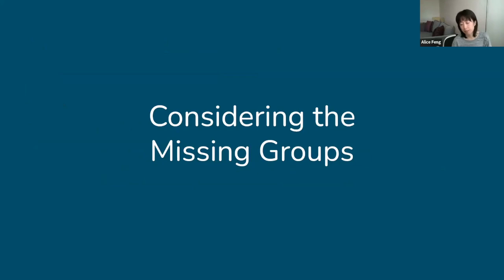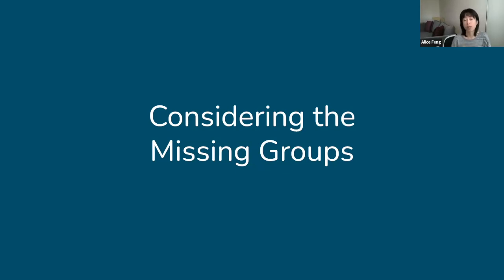Now let's talk about considering the missing groups. It's important to acknowledge who is and is not included in our data and charts. How many times have we seen charts that show data on white, Black, and Hispanic and Latino people but not any other races or ethnicities? Or charts that include only men and women and ignore other gender identities? Or maps of the US that don't include any of the territories? Why do we not show these groups, and what is the impact of not showing them? These are important things to be aware of and think about.